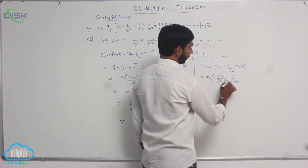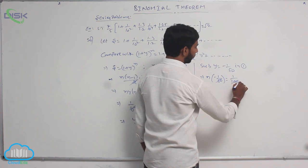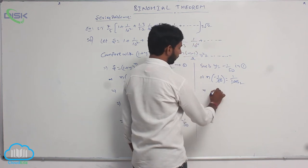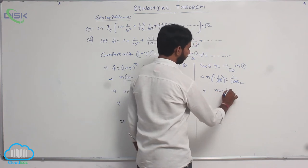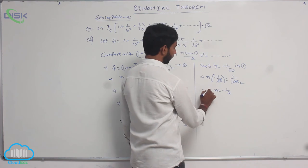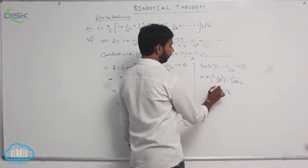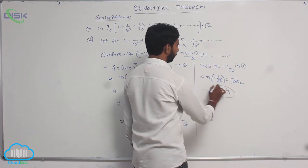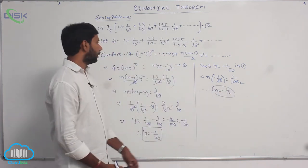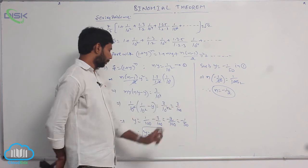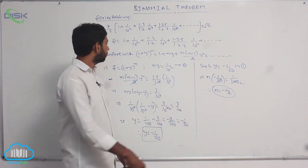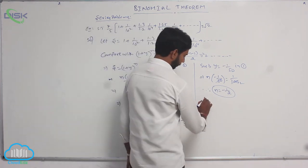Since 50 cancels twice, that implies n = -1/2. We get the values n = -1/2 and y = -1/50. Now substitute these into S.